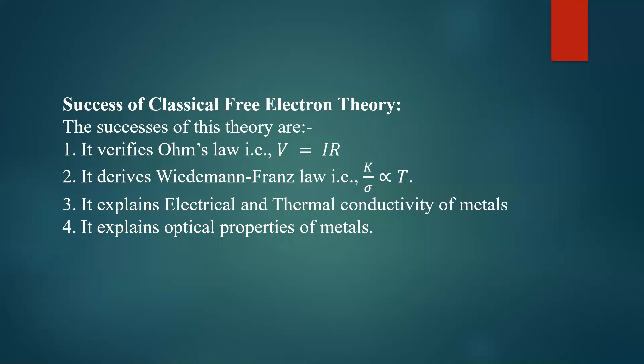What are the success points of classical free electron theory of metals, and also the failure points? Basically, this classical free electron theory assumes the random motion of the electrons in the metal. Electrons are considered as gas.